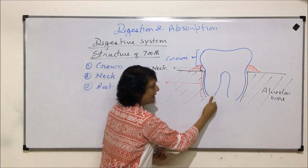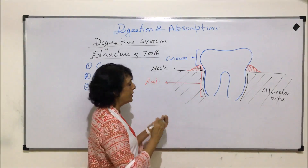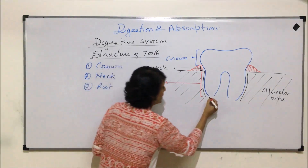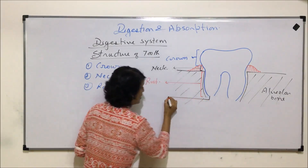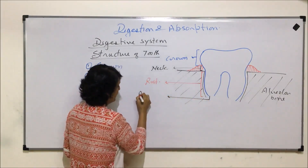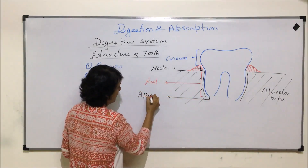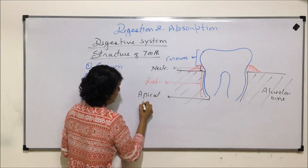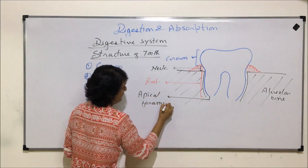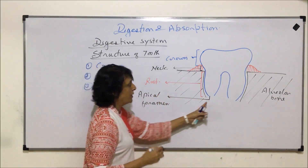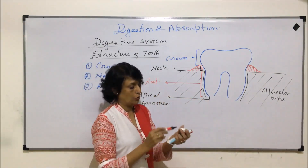The root part has openings at its base, and these openings are known as the apical foramen — the opening of the root.